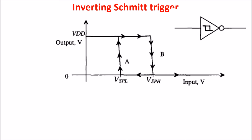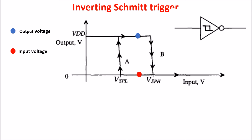Now before seeing the circuit, let's see the working of the Schmitt Trigger in the transfer curve. We assume to start from zero as input voltage. In this situation the output is high at VDD. If we increase the input voltage, the output remains at VDD, even if the input voltage goes above VSPL. But when the input arrives at VSPH, the output goes to zero very fast. This is the high switching point in which the high-to-low transition occurs.